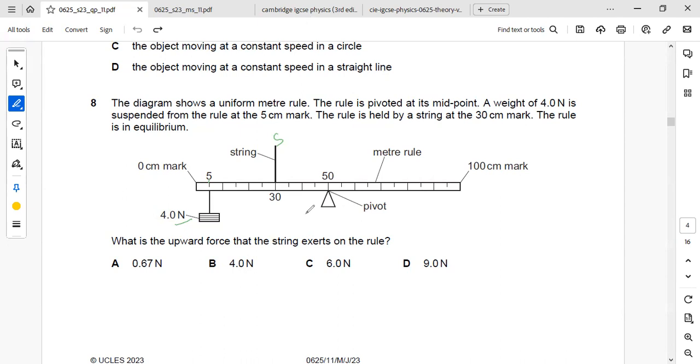In equilibrium condition, the clockwise moments will be equal to anti-clockwise moments. This can be considered as the clockwise moment in this direction. So the clockwise moment can be written as moment equals force into perpendicular distance from the pivot.